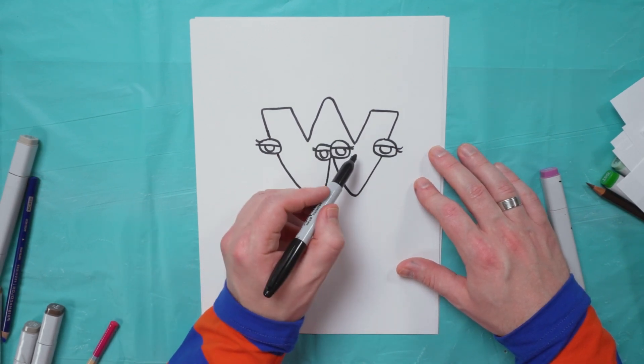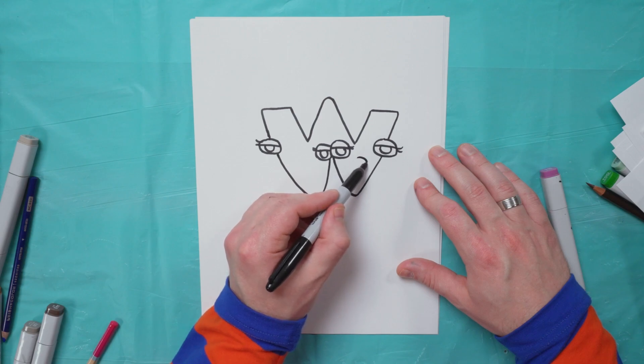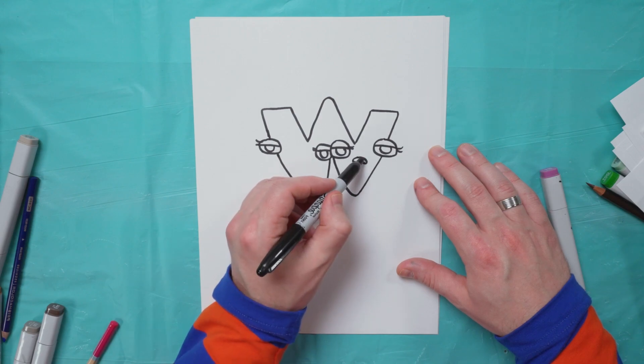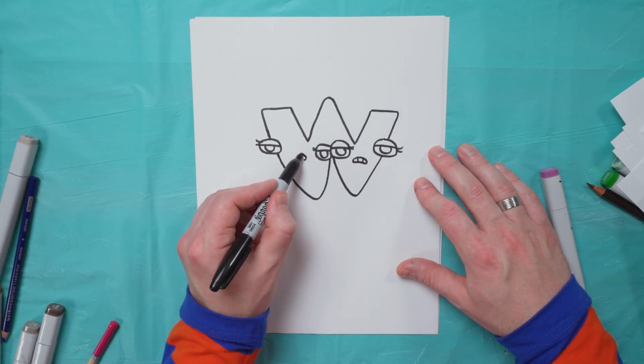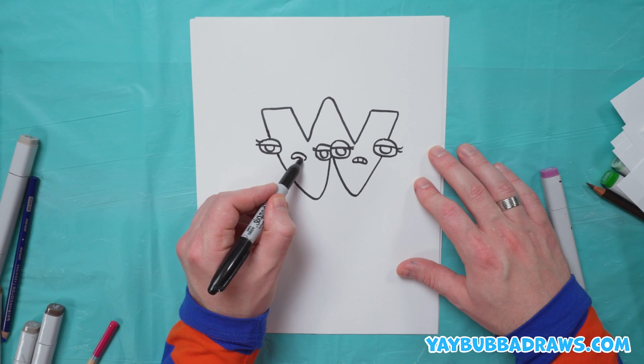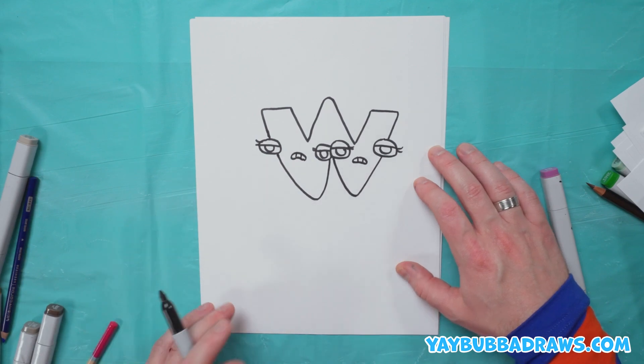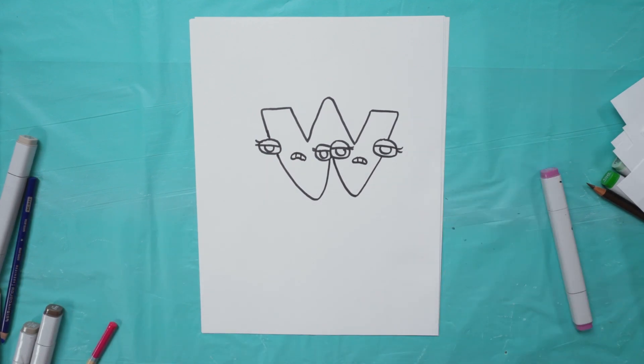Now to finish off the outline, we're going to do a small mouth here, curving down just a little bit, and then two lines inside. We'll do the same shape over here, and two lines, and there we have the outline of W.